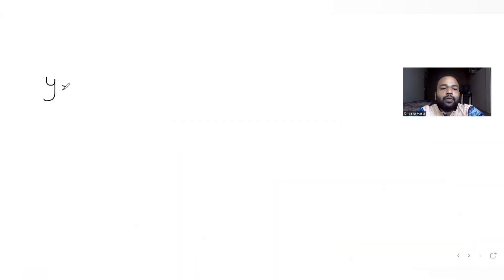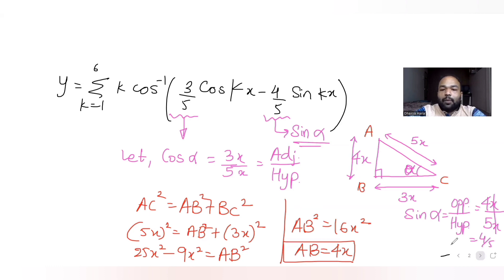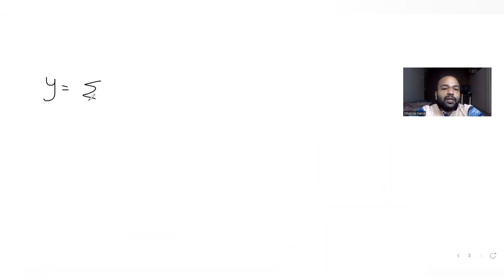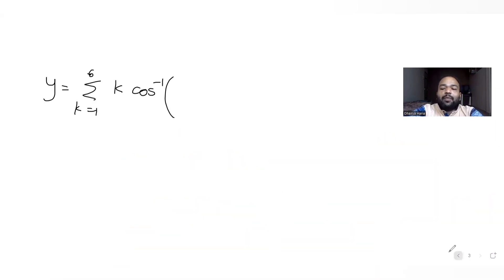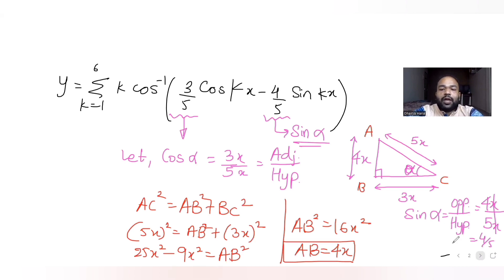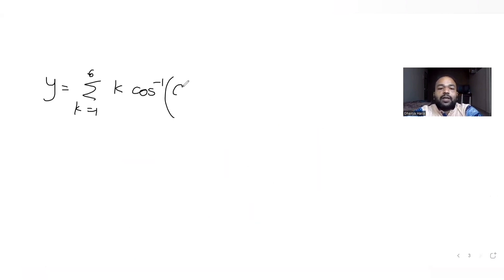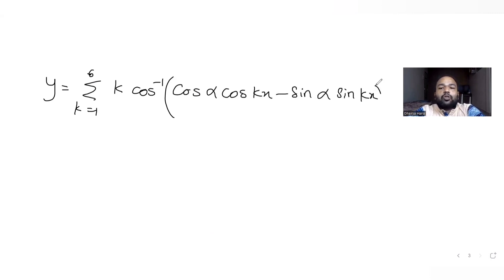Substituting back, y becomes summation of k equal to 1 to 6, k cos inverse of (cos α cos kx minus sin α sin kx).